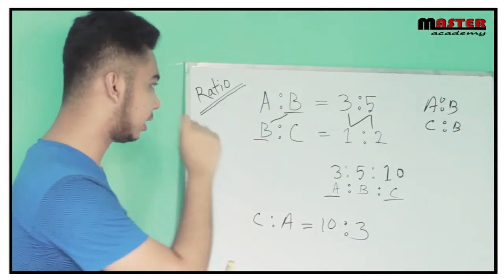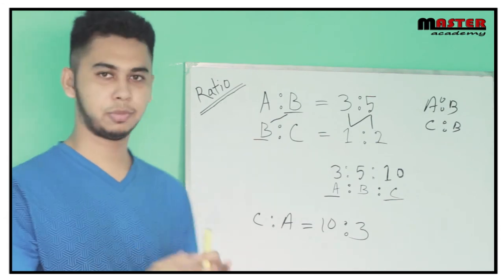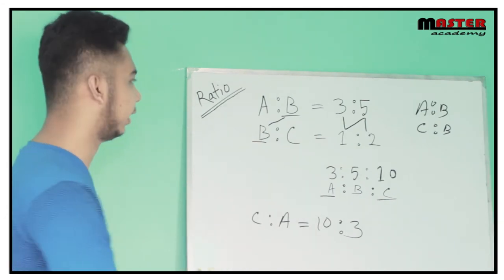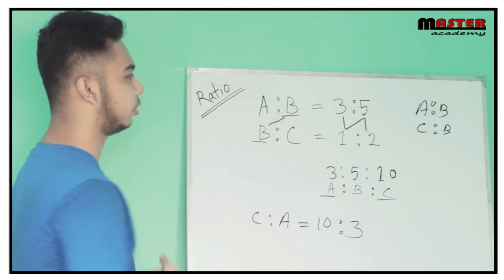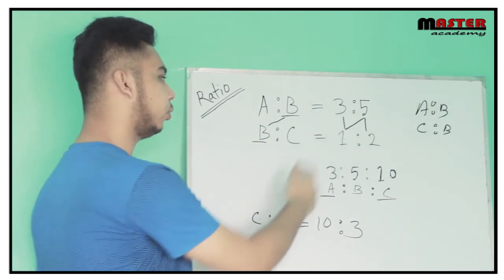If you want to follow the A type method, A B B, A is 3 to 5. A B B, B C, 1 is to 2.